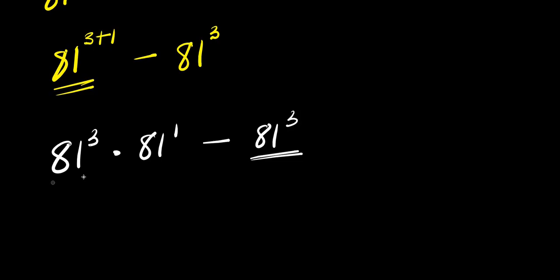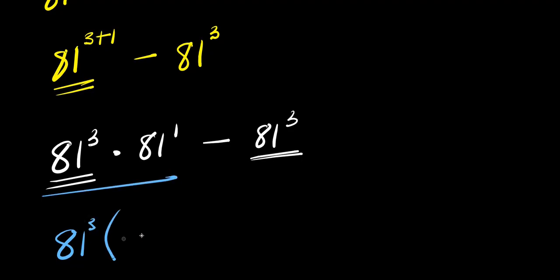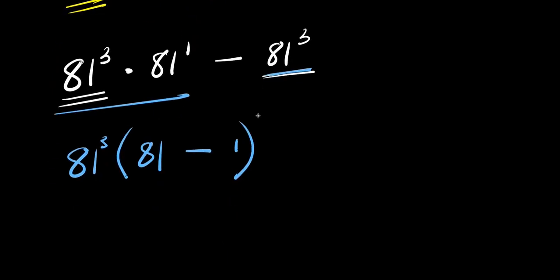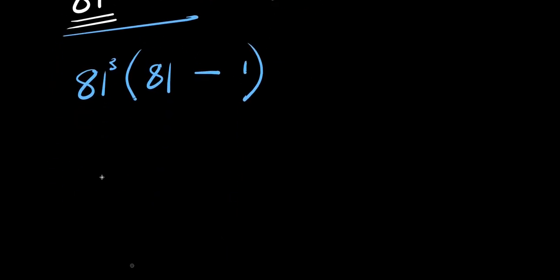I have 81 power 3 here and 81 power 3 here — I can factor that out. So I have 81 power 3 times 81 power 1 minus 1, which gives 81 power 3 times open bracket 81 minus 1 close bracket.